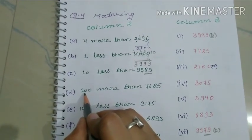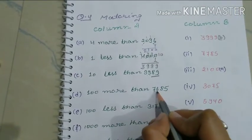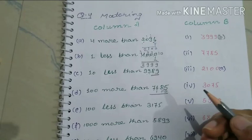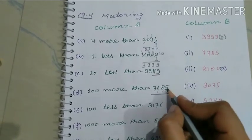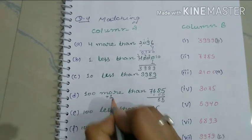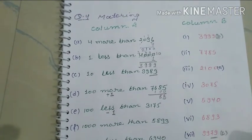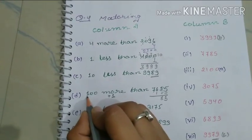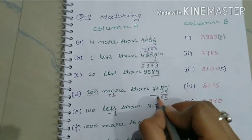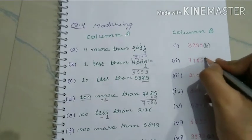Next: 100 more than 7685. When we want more, we add; when we want less, we subtract. Adding 100 to 7685: the hundreds digit 6 plus 1 equals 7, giving us 7785. This matches answer T.